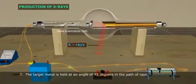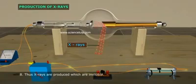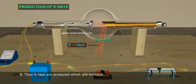The target metal is held at an angle of 45 degrees in the path of the rays. Thus, X-rays are produced, which are invisible.